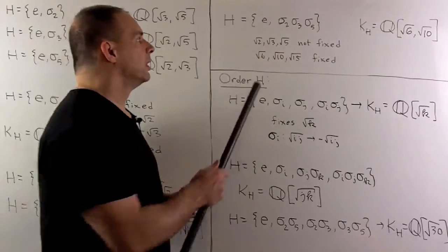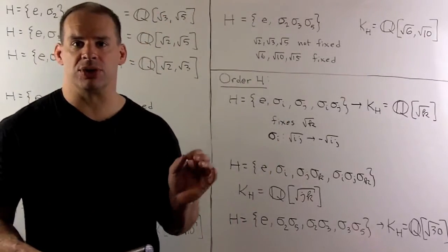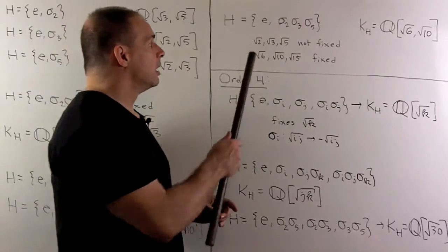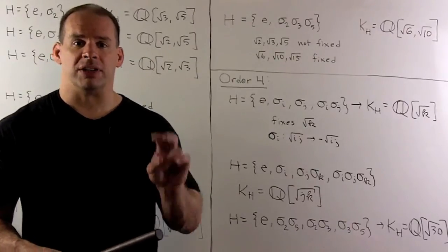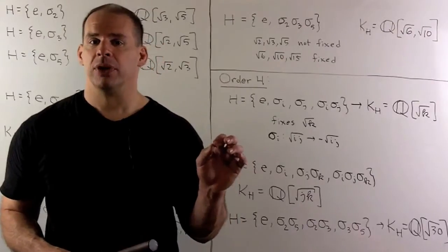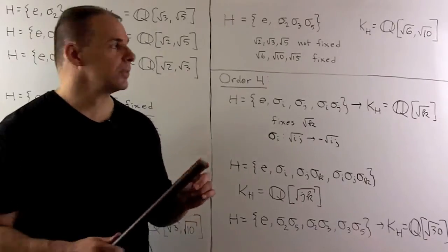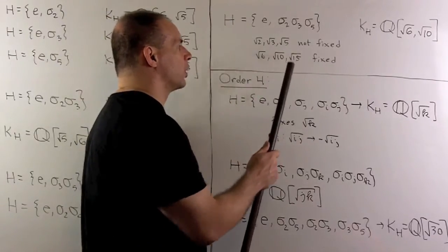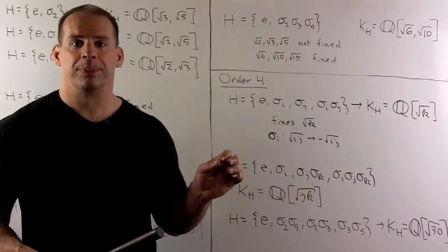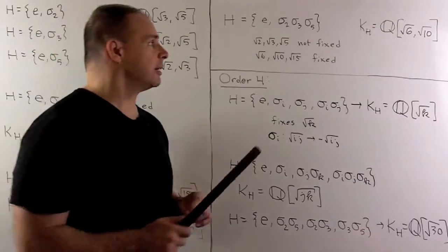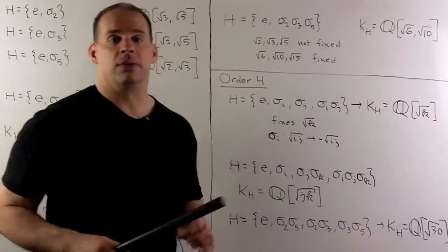For the final subgroup of order 2, {e, σ₂σ₃σ₅}: σ₂σ₃σ₅ sends √2, √3, √5 each to their negatives, so none are in the fixed field. Taking the product of any two, the negatives cancel, so √6, √10, and √15 are all fixed. We note that √6 · √10 = √60 = 2√15, so we don't need to adjoin the last element. The fixed field is Q(√6, √10).